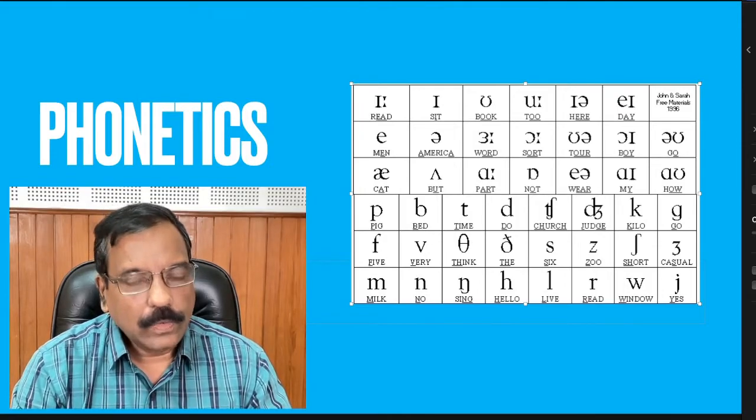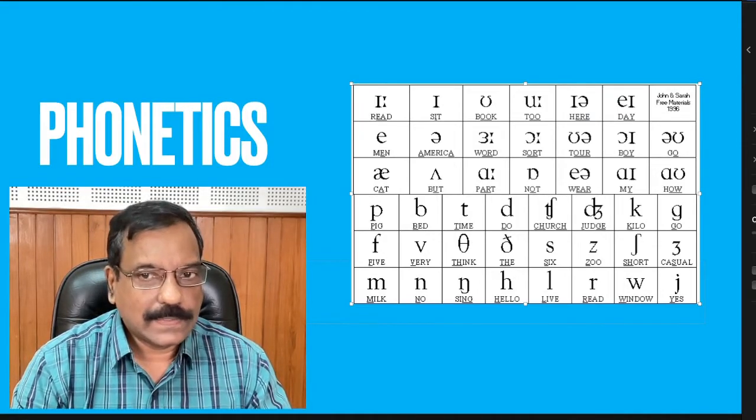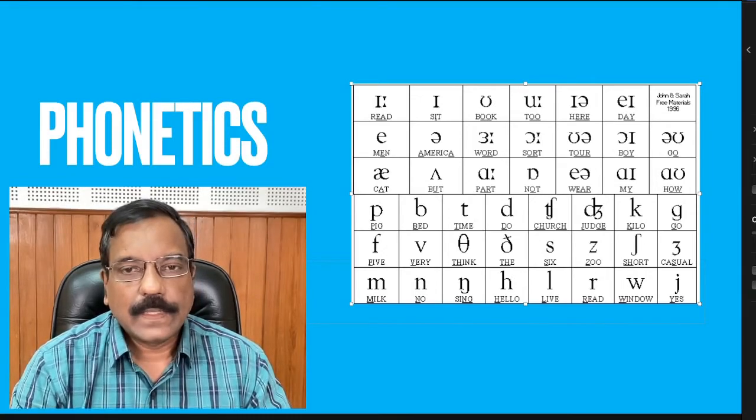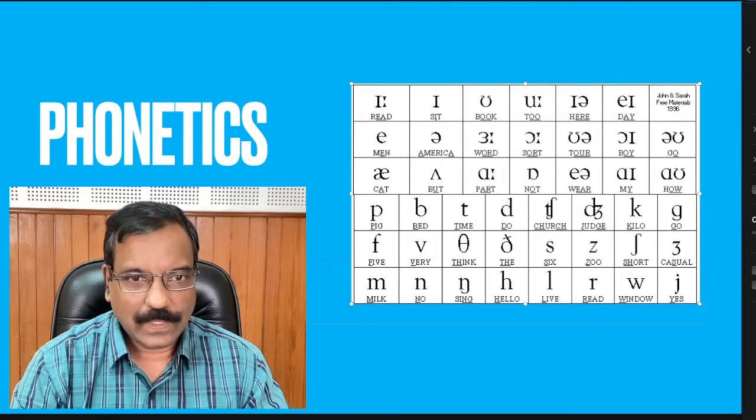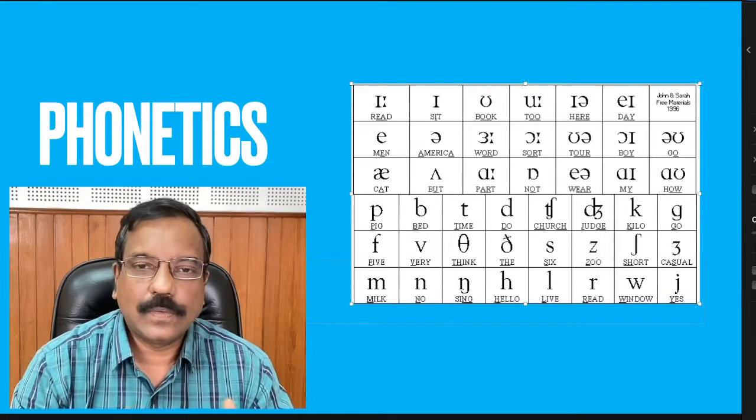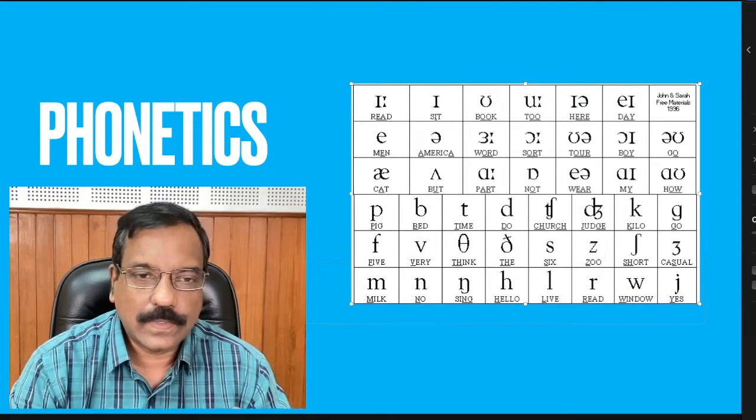And how do we do it? English has only 26 letters as we know - A, B, C, D - and no language can function with only 26 sounds. Naturally, you can imagine that you need a lot more sounds than that.